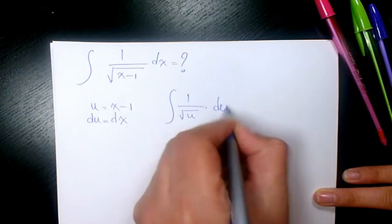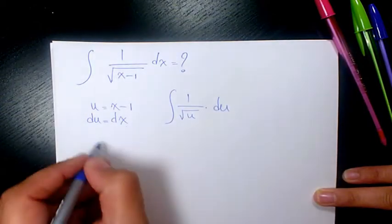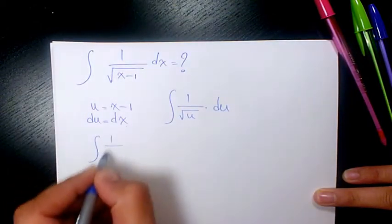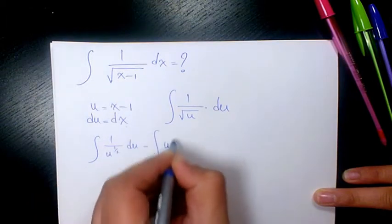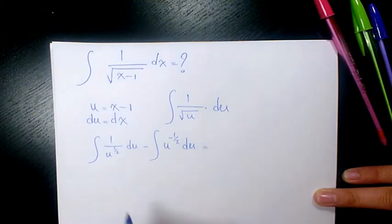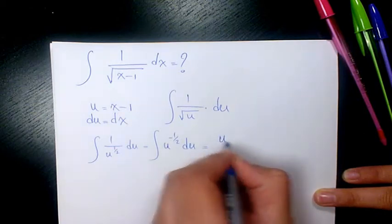When you integrate, it is going to be u to the power of negative 1/2 plus 1, divided by negative 1/2 plus 1, plus a constant number.